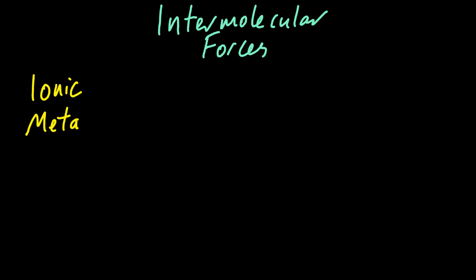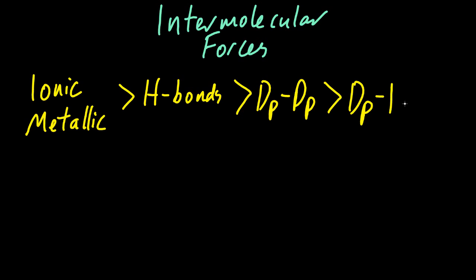Let's look at intermolecular forces. Ionic and metallic are the strongest - you could argue they weren't intermolecular forces, but the IB says it's okay. Hydrogen bonds are weaker, dipole-dipole weaker still, dipole-induced dipole even weaker, and in IB the weakest are the London dispersion forces.